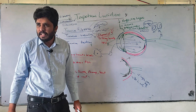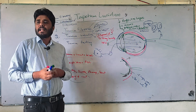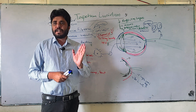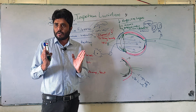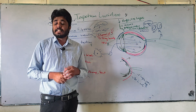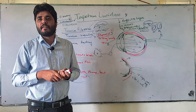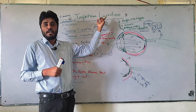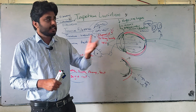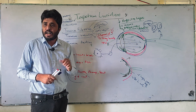In summary, tapetum lucidum is an anatomical structure — a reflective layer present in the eyeball of many vertebrates, located between the retina and the vascular coat. It reflects photons to provide another chance for photoreceptor cells to reabsorb the light. This mechanism helps animals see much better when there is less light, especially at night. Due to this, many animals' eyes glow or shine in the night. Tapetum lucidum is also colloquially called the eye shiner.